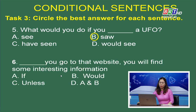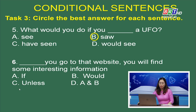Sentence 6: (___) you go to that website, you will find some interesting information. Trong câu này còn thiếu một từ nối. Các em có 2 từ nối: if (A) và unless (C) — lựa chọn B và D không phù hợp. Xét về nghĩa: bạn sẽ tìm thấy những thông tin thú vị nếu bạn truy cập vào trang web đó. Sự lựa chọn nào phù hợp? A is correct — if là đáp án chính xác.